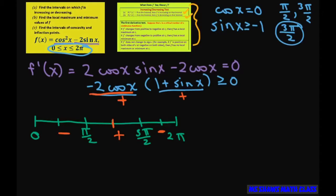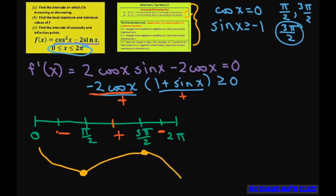What that means is that it's decreasing from 0 to pi over 2, increasing from pi over 2 to 3 pi divided by 2, and decreasing after that. So from 0 to 2 pi, we have a local minimum at pi over 2 and a local maximum at 3 pi over 2.